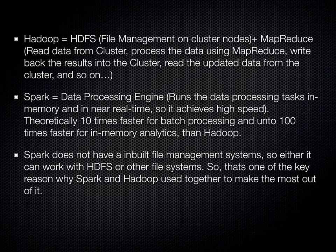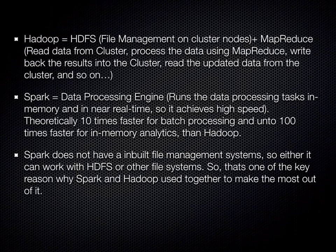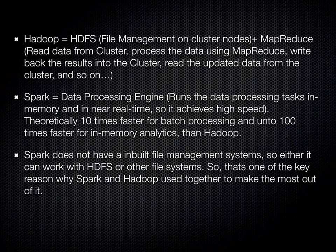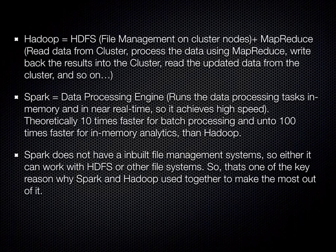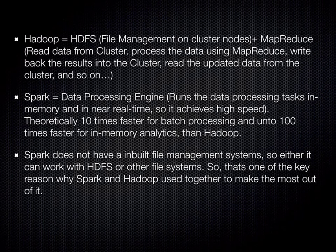You can see that file I/O operations are happening in the Hadoop framework — before data processing it reads the data from the cluster, processes it, and then writes back before it goes to the next cycle. Whereas in Spark, the data processing engine runs tasks in memory and in near real time. It's called near real time because it runs batch processing in memory, achieving very high speed. Theoretically, Spark is 10 times faster for batch processing and up to 100 times faster for in-memory analytics than Hadoop.